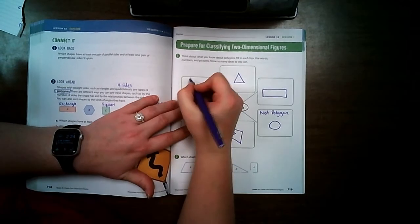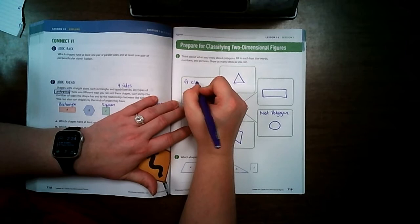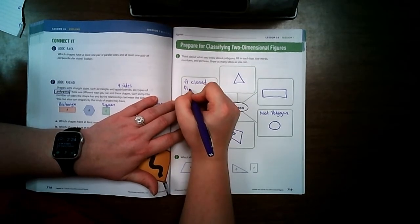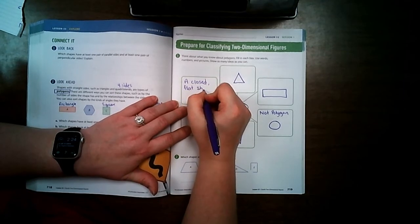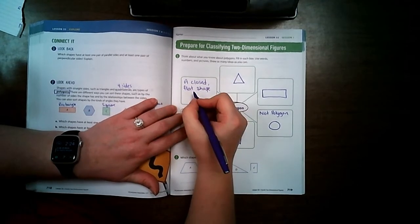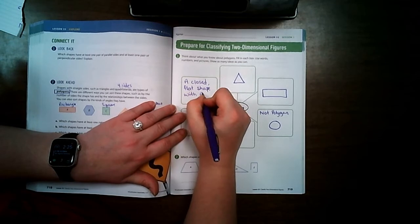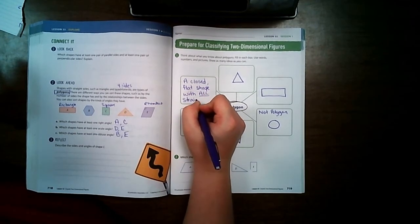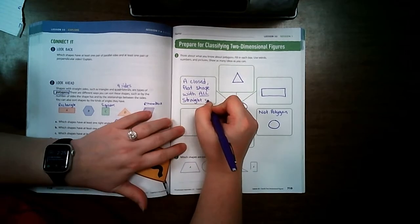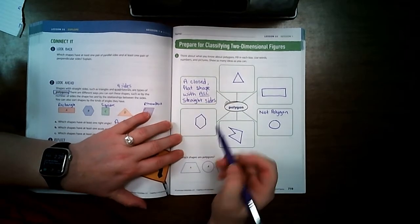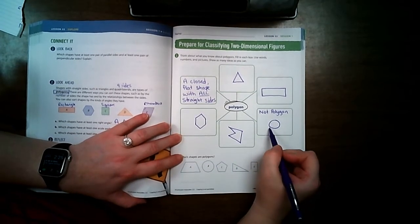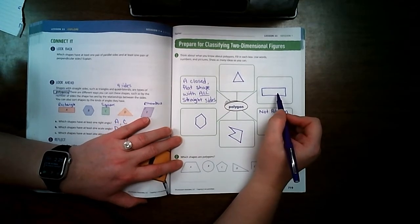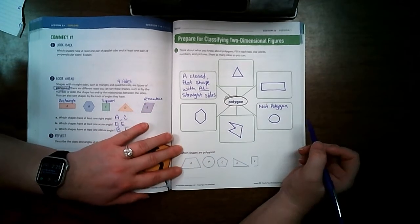The definition of a polygon is a closed, flat shape with all straight sides. So, a circle does not have any straight sides. That is why it's not a polygon. But all of these shapes do have straight sides. That is why they are polygons.